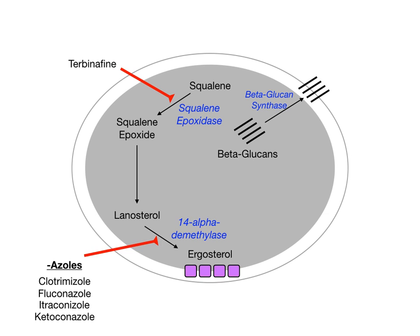The group of antifungals that inhibits this process specifically inhibits beta-glucan synthase. This is the echinocandins — drugs like caspofungin. This group all ends in '-fungin.' Caspofungin is an example of an echinocandin. These drugs inhibit beta-glucan synthase, preventing the activation of beta-glucans, which prevents the structural components that make up the fungal cell wall. Just like with the azoles and terbinafine, if you inhibit a process that creates a barrier on the outside of the fungal cell, you can kill it.